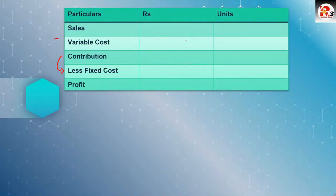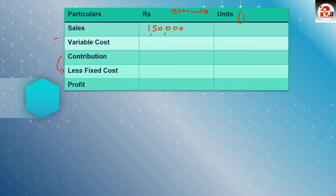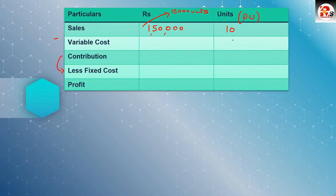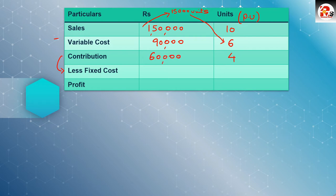15,000 units information is given — note down 15,000 units. Sales amount is 1,50,000. You will have to find the per unit figures as well. Per unit sales: 1,50,000 divided by 15,000 equals Rs. 10 per unit. Variable cost per unit is given as 6. Total variable cost amount: 6 multiplied by 15,000 equals 90,000. So: 10 minus 6 equals 4 per unit, and 1,50,000 minus 90,000 equals 60,000.